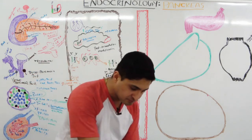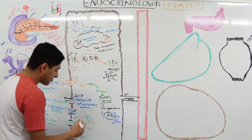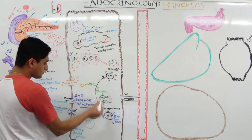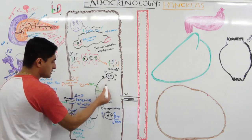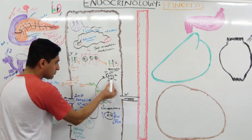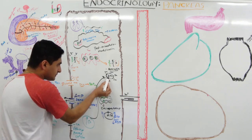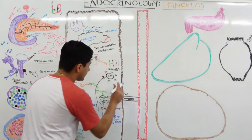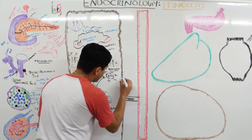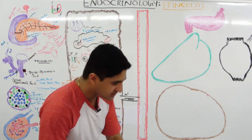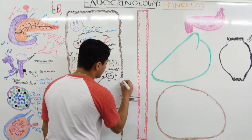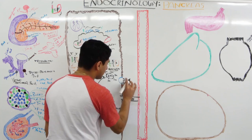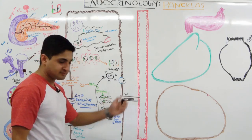Whenever intracellular calcium goes up, the calcium causes the insulin-containing granules to fuse with the cell membrane and undergo exocytosis, releasing insulin and C peptide from the cell.